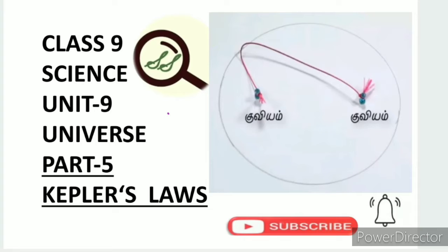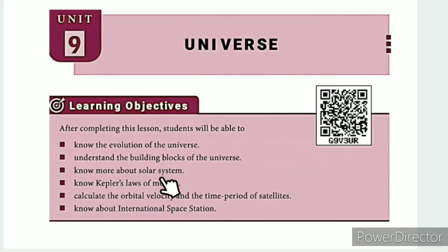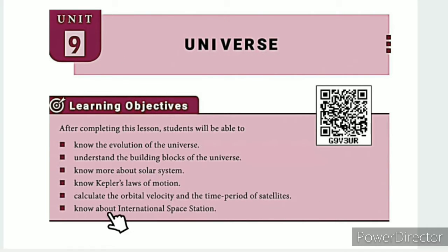Greetings from SS Class 9 Science, Unit 9: Universe, Part 5 — Kepler's Laws. The learning objectives are: know the evolution of the universe, understand the building blocks of the universe, know more about the solar system, know Kepler's laws of motion, calculate the orbital velocity and time period of satellites, and know about the International Space Station.